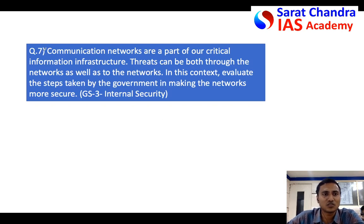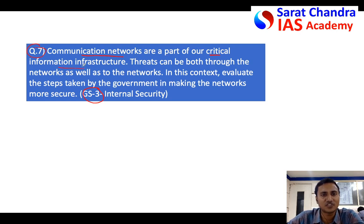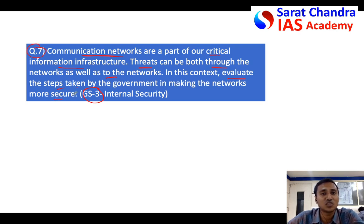Question number seven is about internal security in General Studies Paper 3. Pause the video, read the question for ten seconds, then come back. In this question also there are two statements: the first is that communication networks are a part of critical information infrastructure; the second is that threats are both through the communication network as well as to the communication network. The last part is the actual question: evaluate various steps taken by the government to make these communication networks more secure.